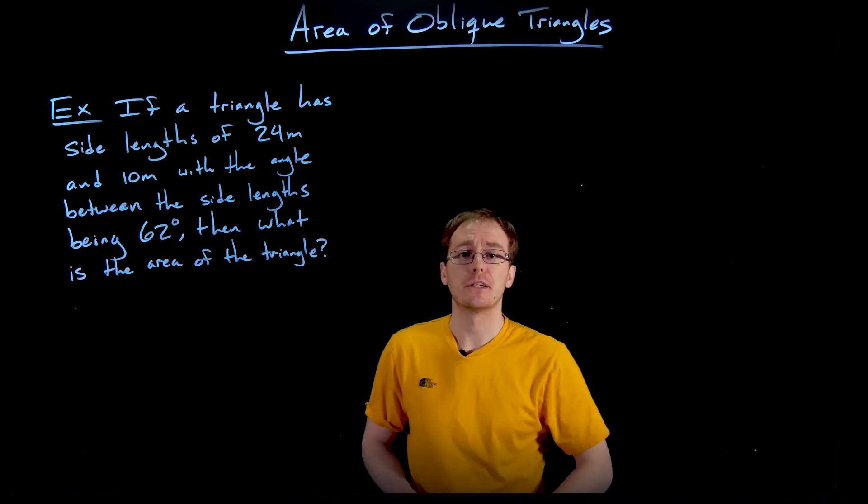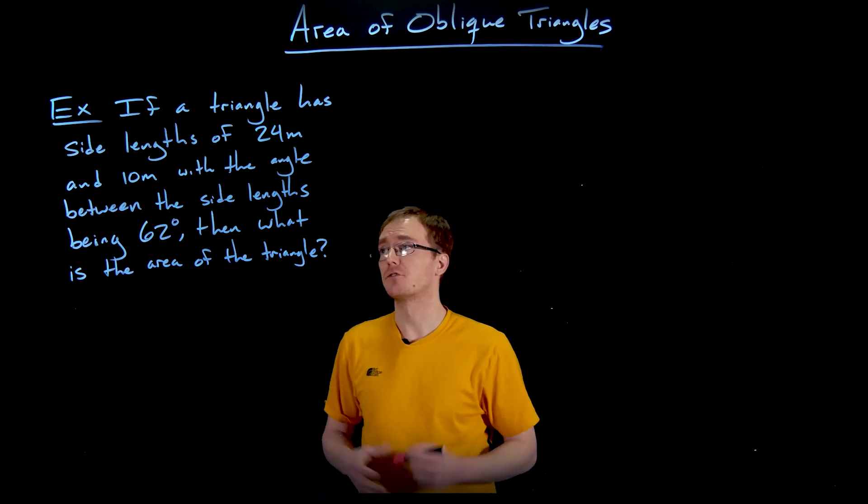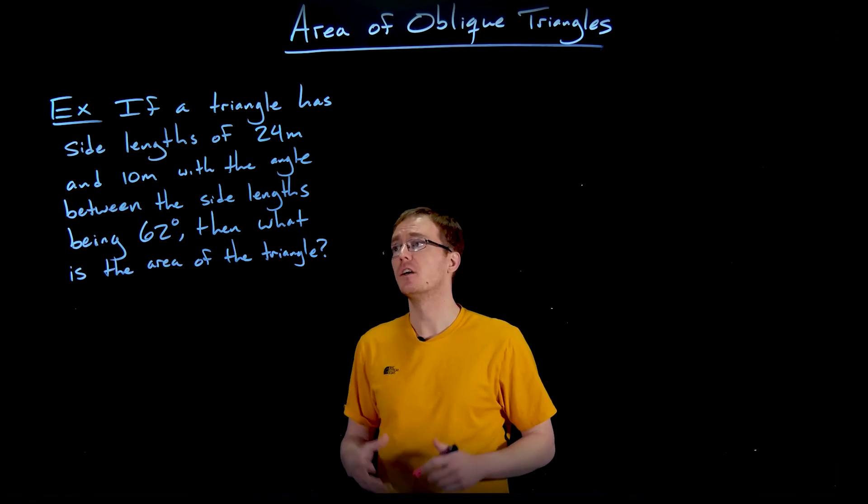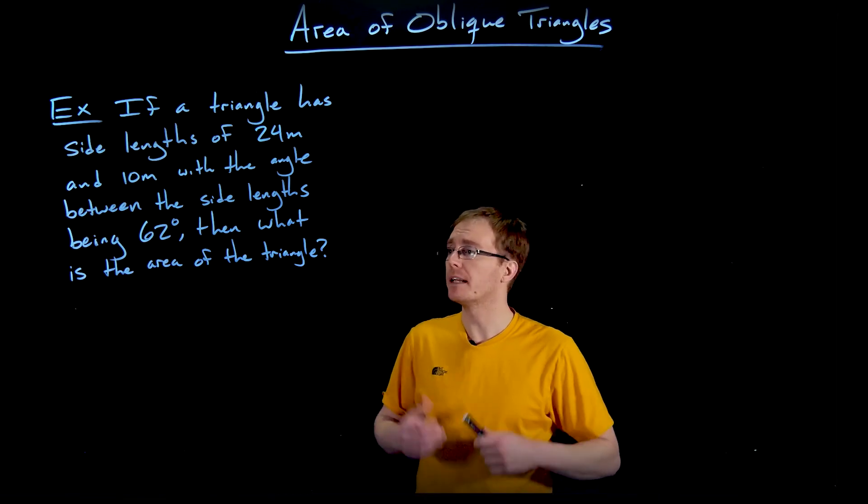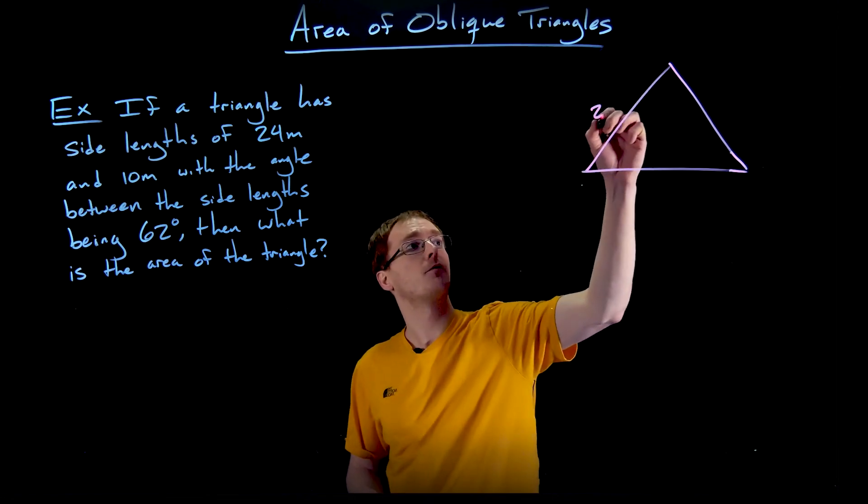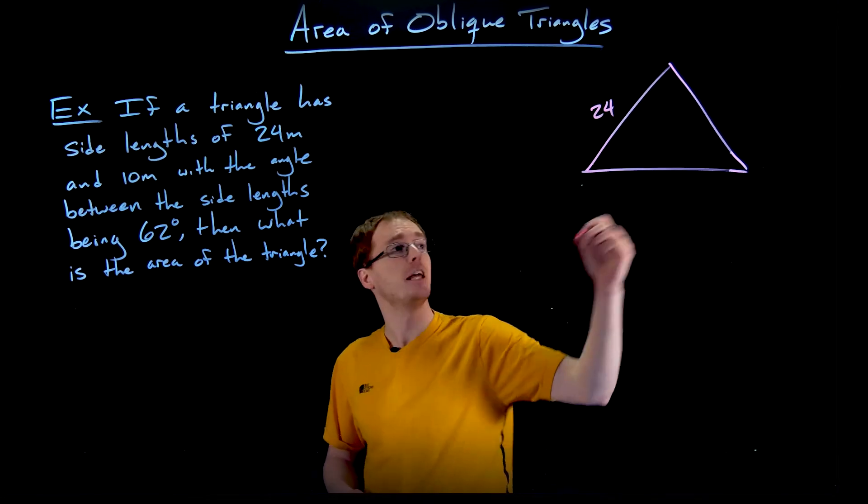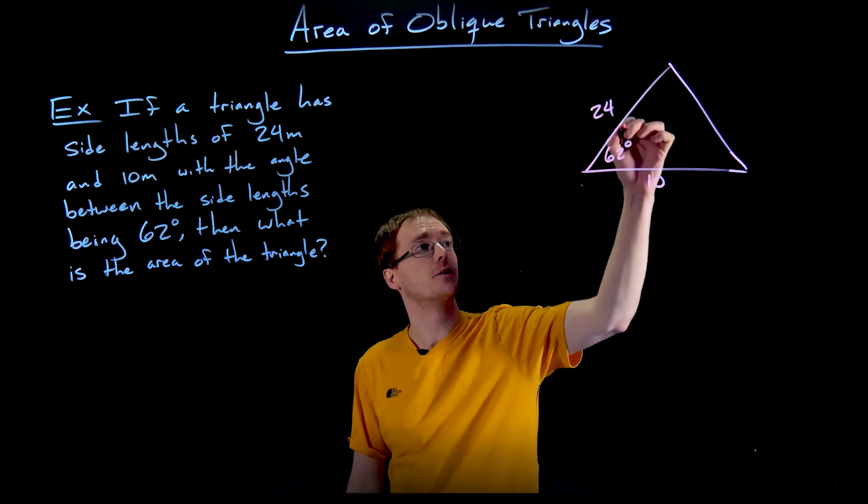We've got a quick example here where we're going to try to find the area of triangle. So we're told if a triangle has side lengths of 24 meters and 10 meters with the angle between the side lengths being 62 degrees, then what is the area of that triangle?